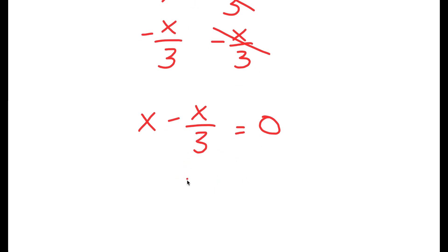So now from here, what I'm going to do is multiply both sides by 3 because we want to get rid of this division of 3. So now I have 3 times x minus x over 3 is equal to 0 times 3.